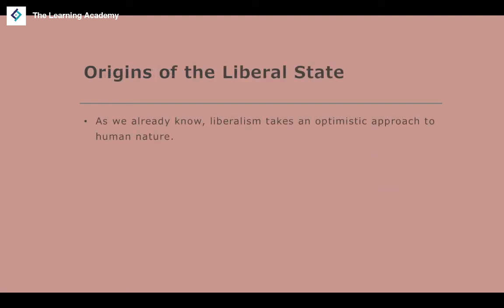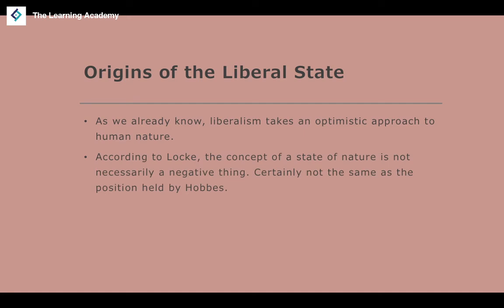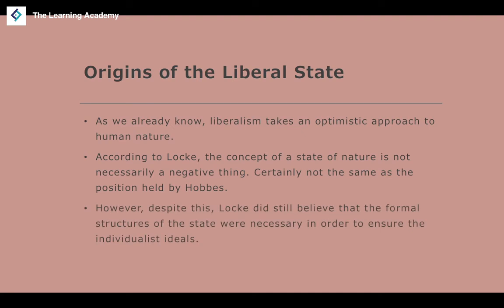Liberalism takes a generally optimistic approach to human nature. In the first lesson we talked about the concept of the state of nature — the state before modern states developed, a state without government. For Thomas Hobbes, the state of nature was something nasty, brutish, and short. But for John Locke, it was not necessarily a negative thing because of the freedom of the individual self that would be allowed within it.